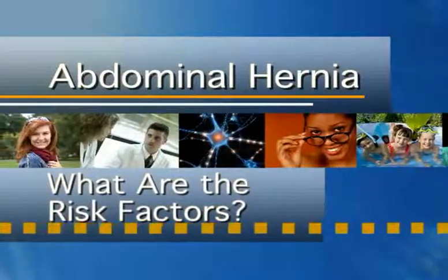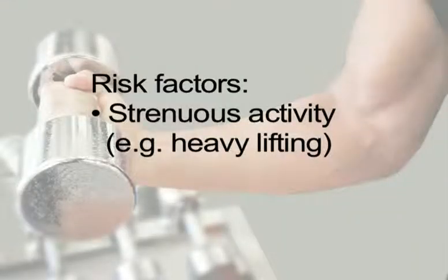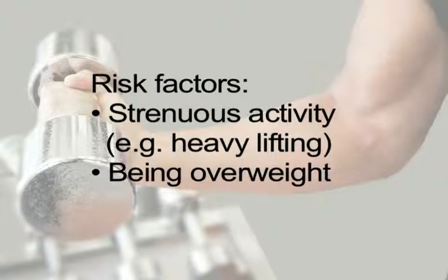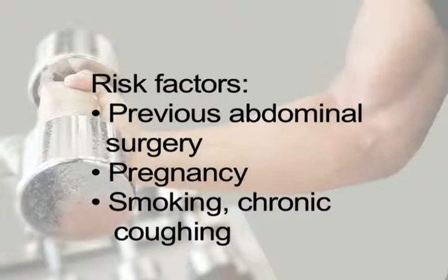What are the risk factors? Risk factors for abdominal hernias may differ according to type. However, overall factors that can increase the risk of abdominal hernias include strenuous physical activity that increases pressure on abdominal muscles, for example heavy lifting, being overweight, previous abdominal surgery, pregnancy, smoking, and chronic coughing.